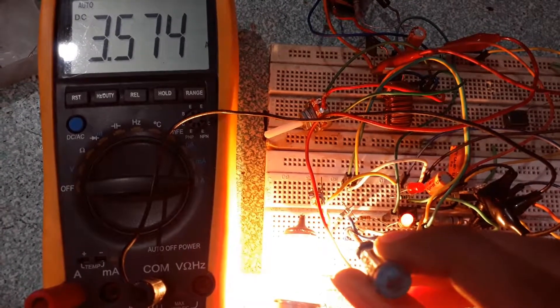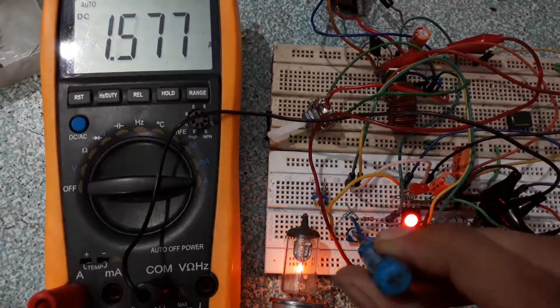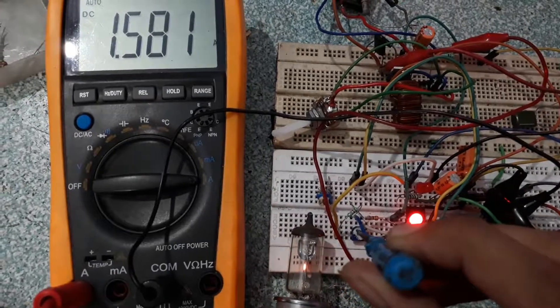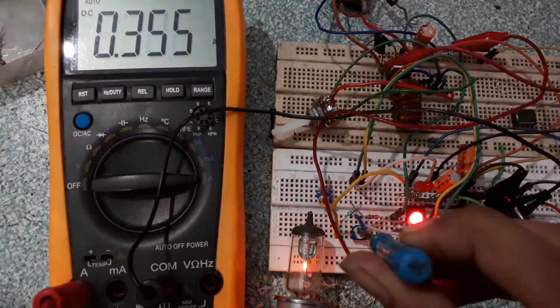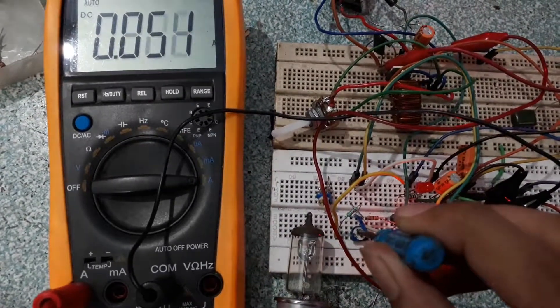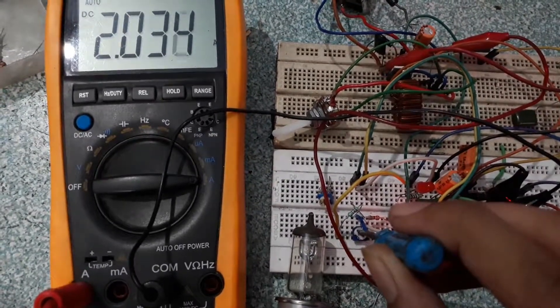Now I can change the current using the current set pot. And later I will add a constant voltage LED so that both the constant voltage and constant current can be visualized.